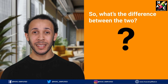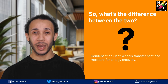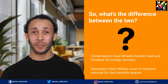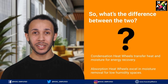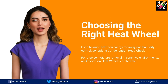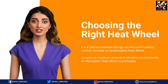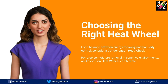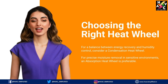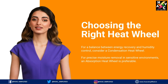So, what's the difference between the two? Condensation heat wheels transfer both heat and moisture, ideal for general energy recovery and moderate humidity control. Absorption heat wheels focus on moisture removal, perfect for low humidity spaces. In summary, if you need a balance between energy recovery and humidity control, choose a condensation heat wheel. For precise moisture removal in sensitive environments, an absorption heat wheel is the better choice.